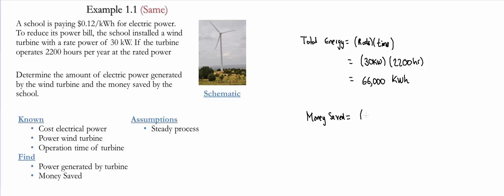So we simply have the total energy and we're going to multiply it by the cost. So this is going to be 66,000 kilowatt hours, and we said that the cost was equal to 12 cents.